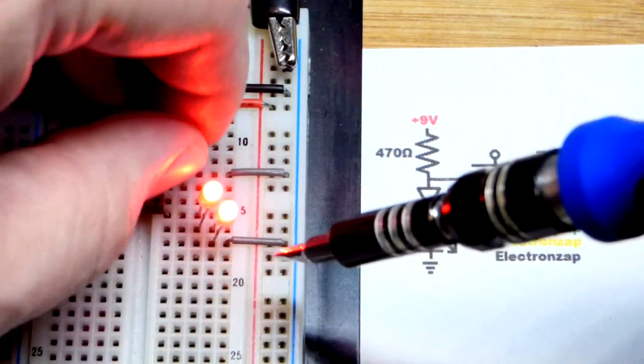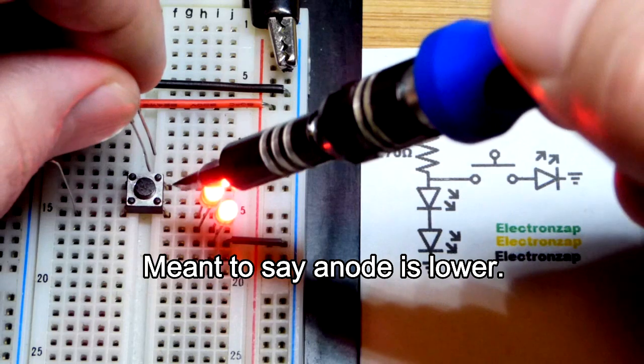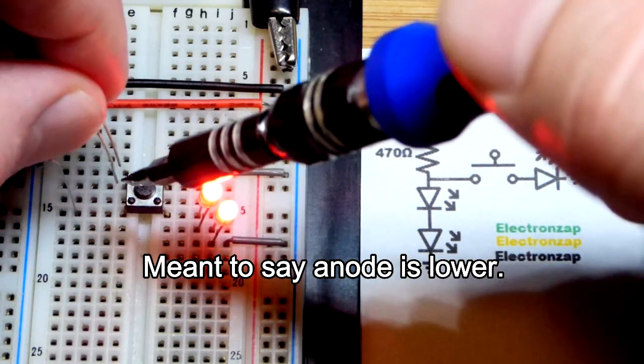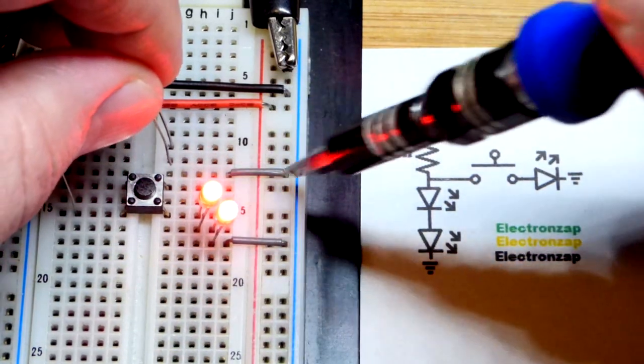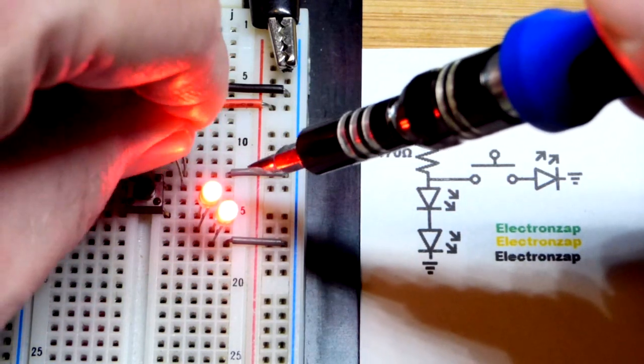And then with this LED the cathode is down below because when I close the switch that side's more positive that side's more negative. So short lead cathode up there.